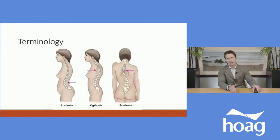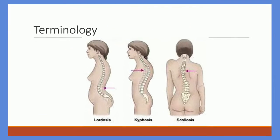When discussing scoliosis, it's important to be clear about what plane we're discussing. The picture on your left shows an example of lordosis, with the arrow pointing to the lower lumbar spine in an arch. The middle picture refers to kyphosis — classically what we refer to as a hunch. Then on the far right we have scoliosis. When talking about lordosis and kyphosis we're discussing the lateral plane; when referring to scoliosis we shift into the anterior-posterior plane.